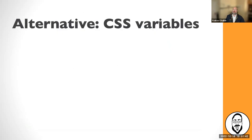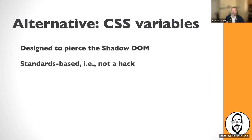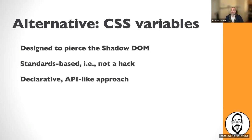The alternative is CSS variables. Why use CSS variables? Number one, they are designed to pierce the shadow DOM — it's actually a standard, not a hack. It's a standards-based, declarative, API-like approach. It's like a declarative mechanism in the CSS world to reach into and pierce the shadow DOM and affect things you don't even see the implementation of.